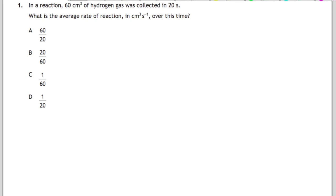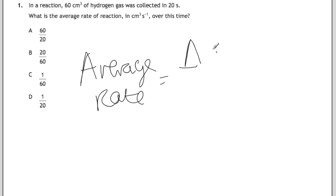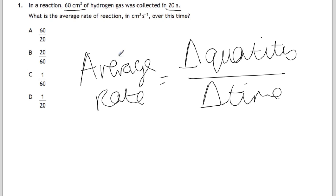Let's start by looking at question 1. Question 1 is looking at average rate, so you need to look at the front of your data book where you can find the equation for average rate. It's shown as delta quantity over delta time. Our quantity is 60 and our time is 20, so your answer is 60 divided by 20.